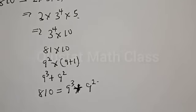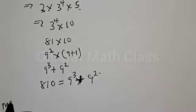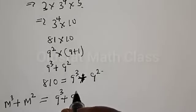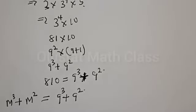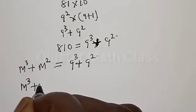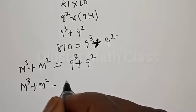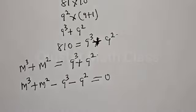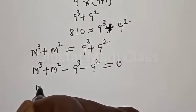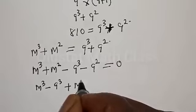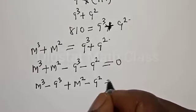Now, let's substitute back to the main equation. We have M³ plus M² equal to 9³ plus 9². Let's equate everything to 0. We have M³ plus M² minus 9³ minus 9² equal to 0. This can be rearranged as M³ minus 9³, then plus M² minus 9² equal to 0.